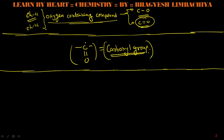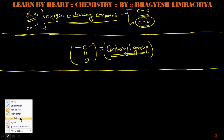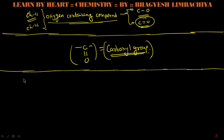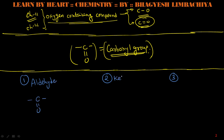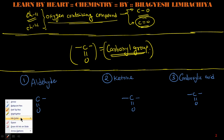There are many compounds which have this C=O carbonyl group. The three most basic ones are: aldehyde, which has a C=O group; ketone, which also has a carbonyl group; and carboxylic acid, which also has a C=O group.